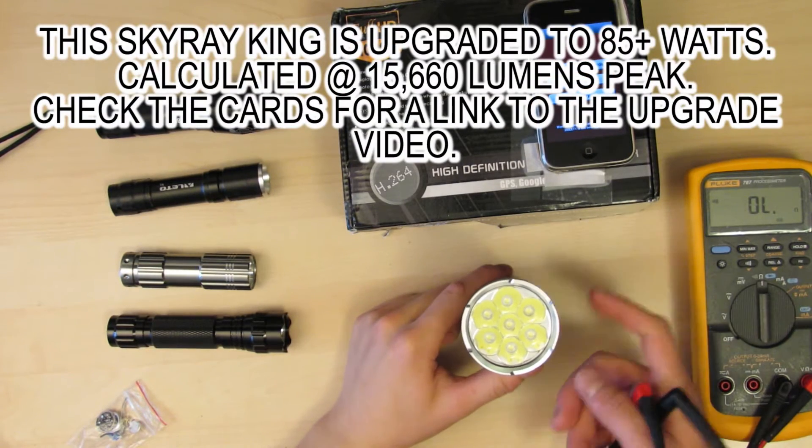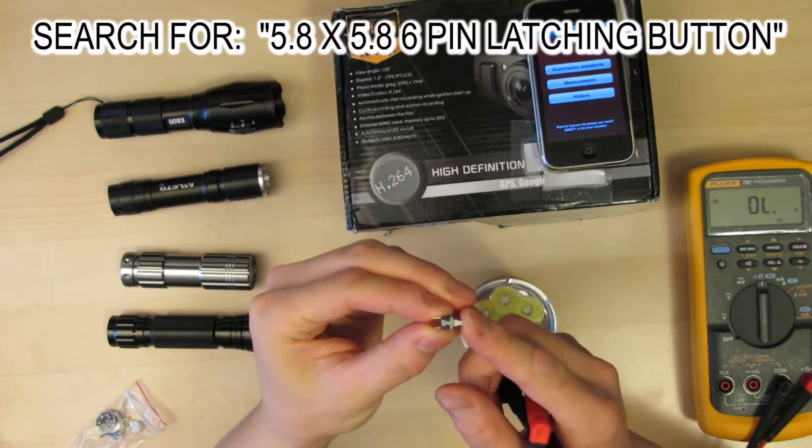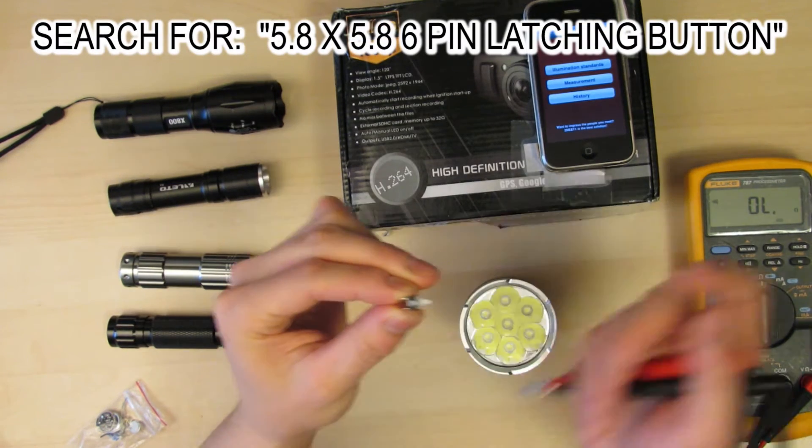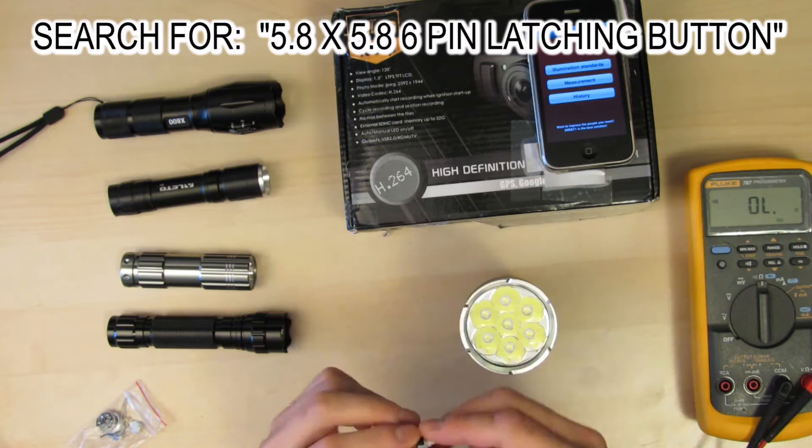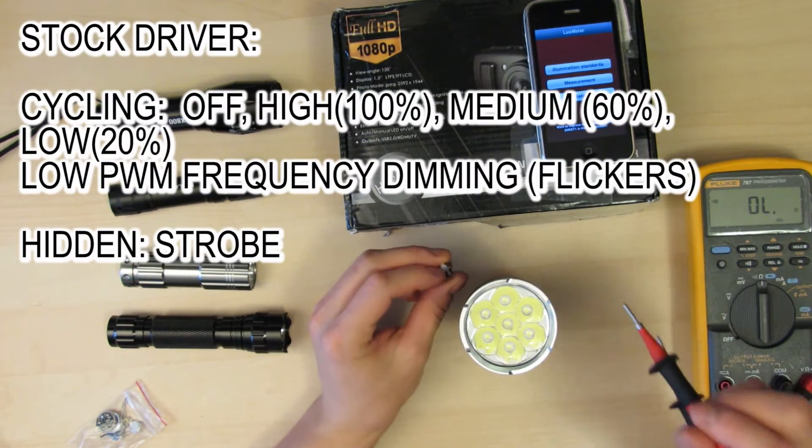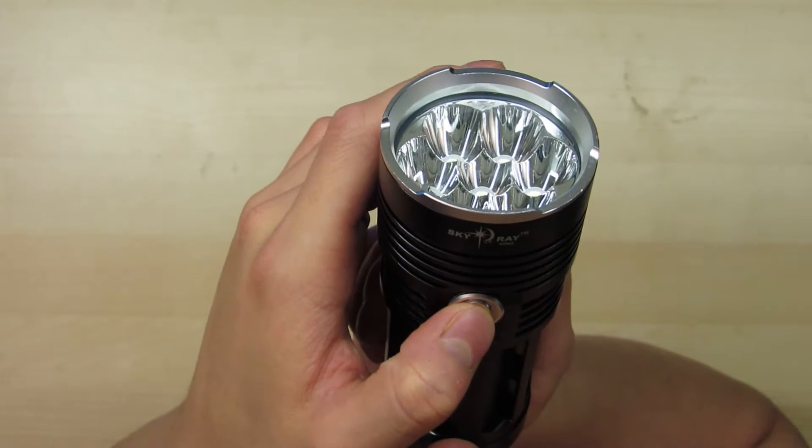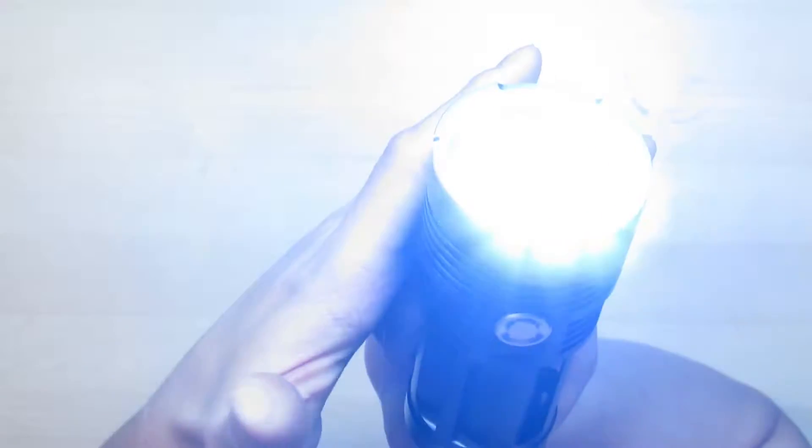In this quick video I'm going to show you how to replace the Skyray King's button with a latching button, which means it stays on and then turns off. The button in there right now is momentary, so the driver cycles through off, high, medium and low. When you press it, once you let go, that's when the action takes place.